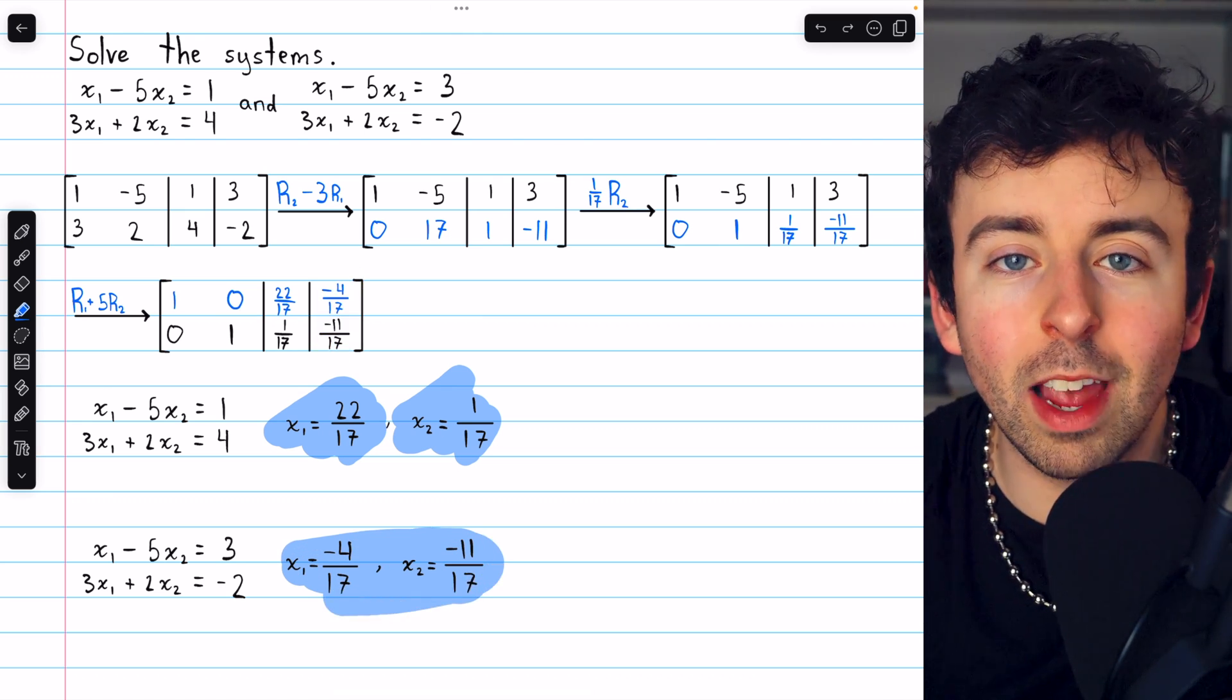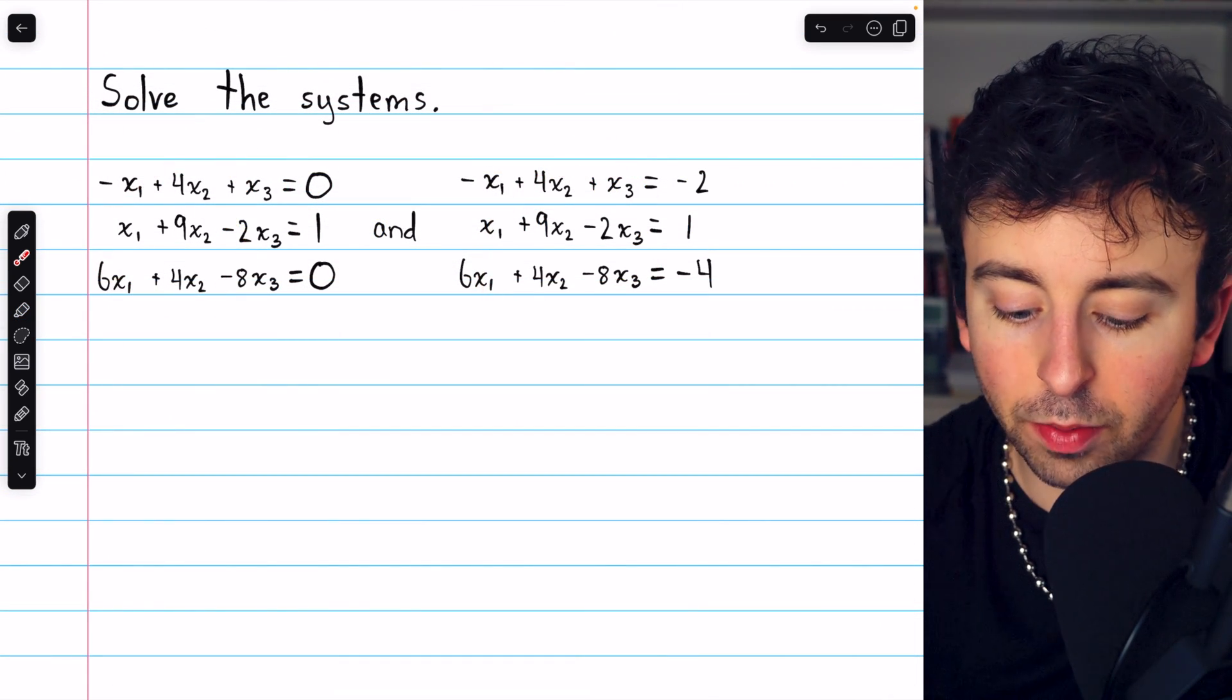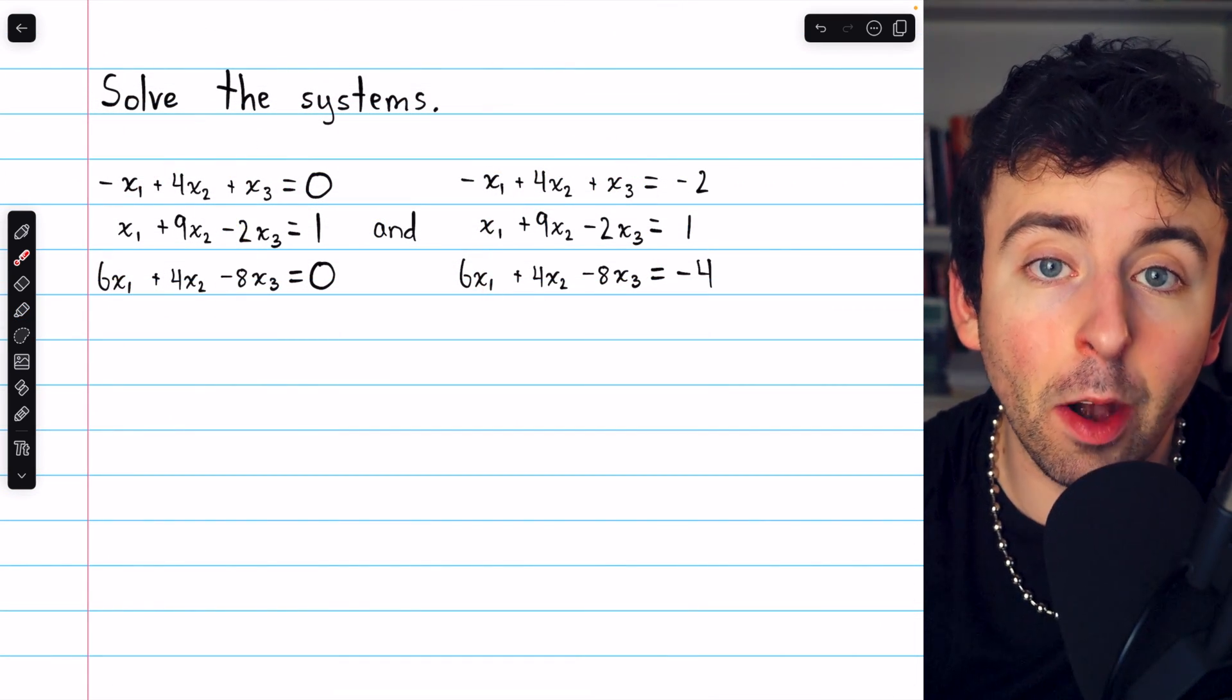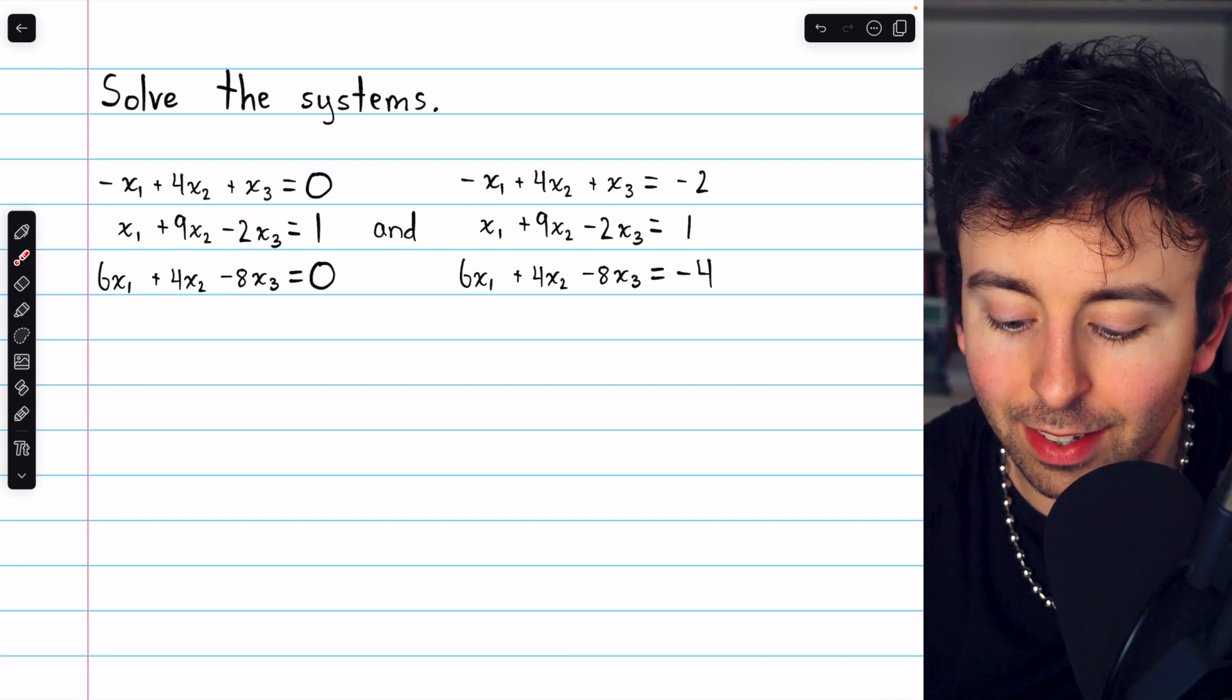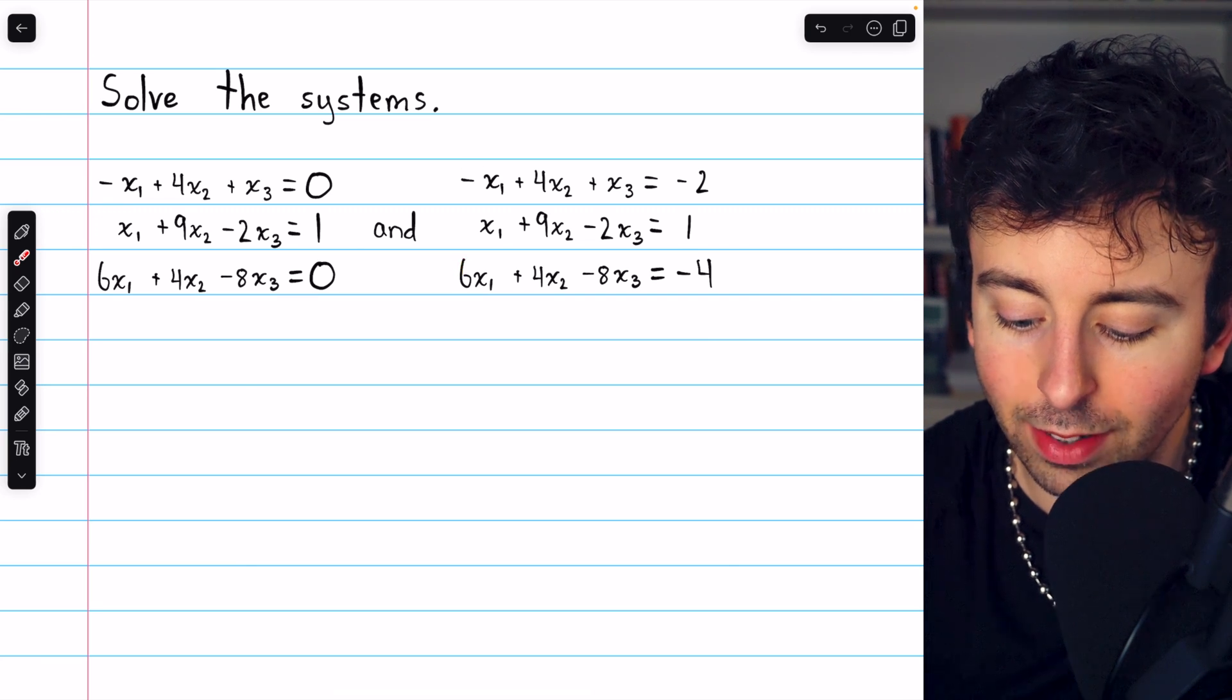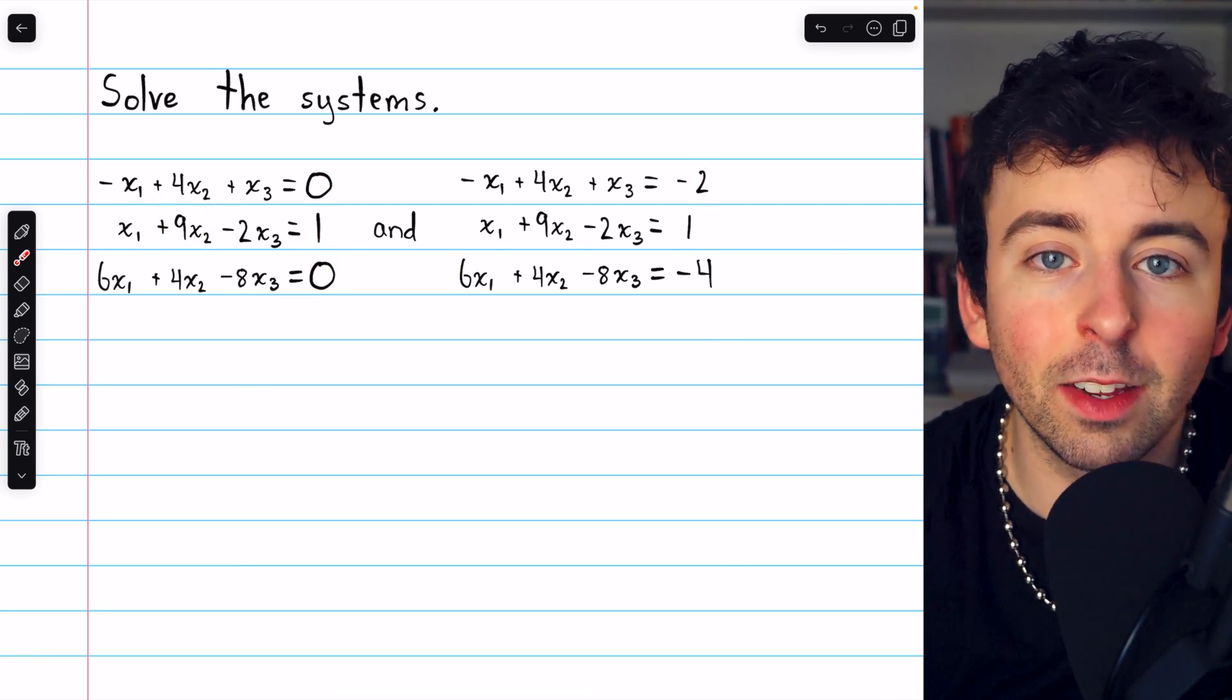Let's see one more example with 3 by 3. Again, here we are asked to solve two systems of linear equations. That could be a lot of work, but notice their coefficients are exactly the same: negative 1, 1, 6, negative 1, 1, 6, and so on. It's just the constants on the right side that are different.